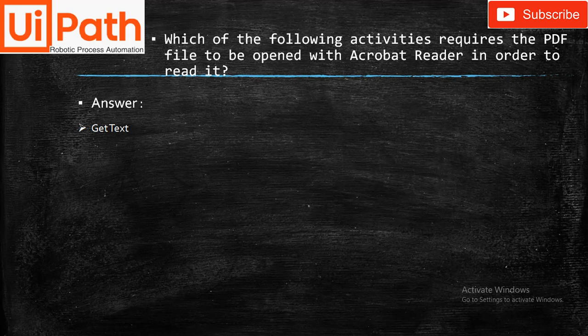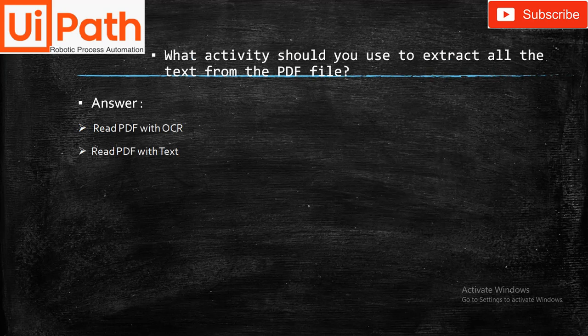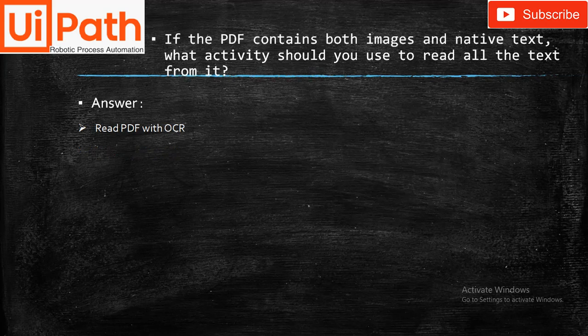Which activity requires the PDF file to be open with Acrobat Reader in order to read it? Answer: Get Text. Will the Read PDF with OCR activity open the PDF document on screen to read it? No. What activity extracts all text from a PDF? Read PDF with OCR and Read PDF with Text. If the PDF contains both image and native text, use Read PDF with OCR.